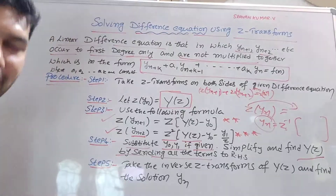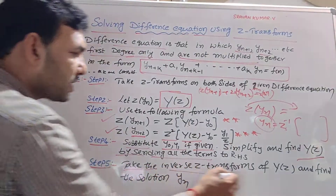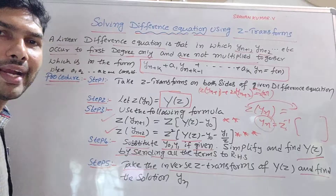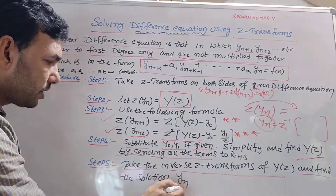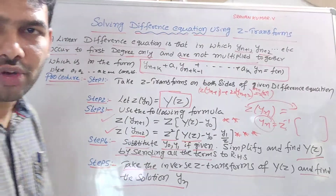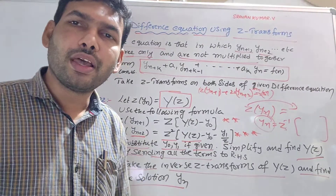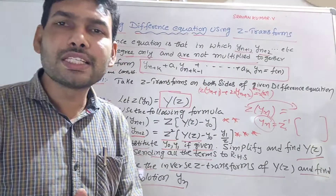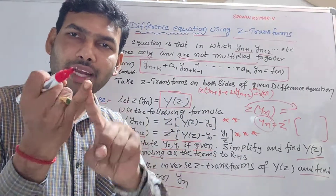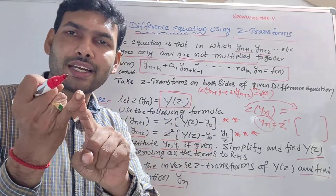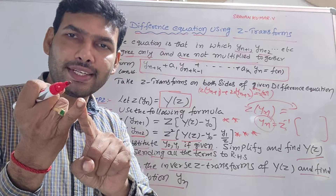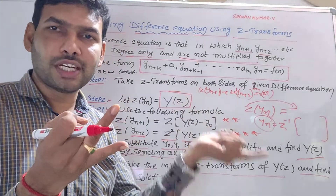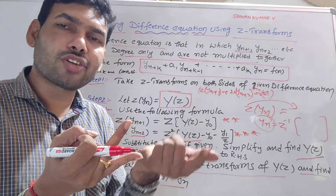So that is the final step. Take the inverse Z transform of Y(Z) and find the solution yn. Yn is the solution. This is how to solve a difference equation. Step 1: take Z transform on both sides. Step 2: let Z of yn equal Y(Z).